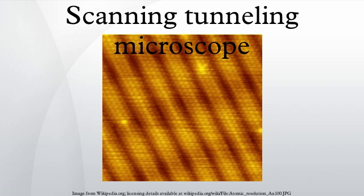A scanning tunneling microscope is an instrument for imaging surfaces at the atomic level. Its development in 1981 earned its inventors, Gerd Binnig and Heinrich Rohrer, the Nobel Prize in Physics in 1986.